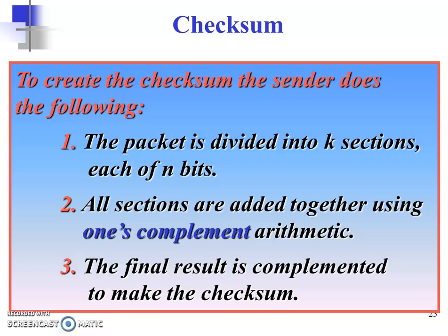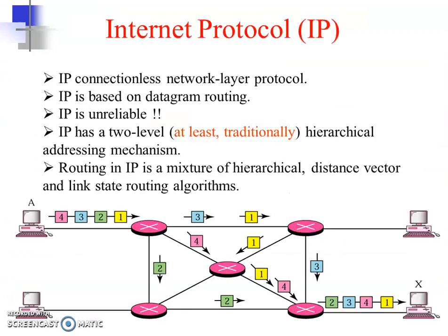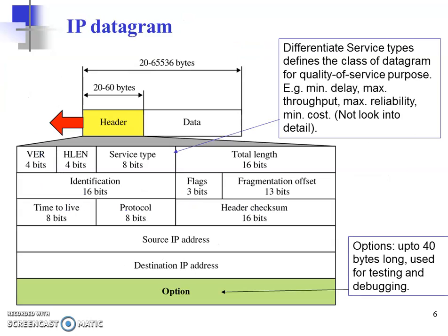For the checksum, the packet is divided into sections; all sections are added together using the one's complement addition method and the final result is complemented to make the checksum. Going back to the IP datagram format, there is the header checksum, followed by the source IP address and destination IP address. Both source and destination IP addresses are 32-bit fields.